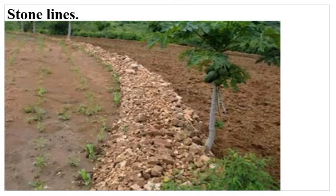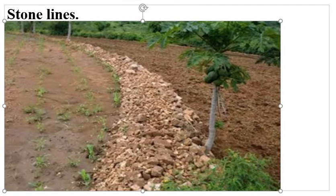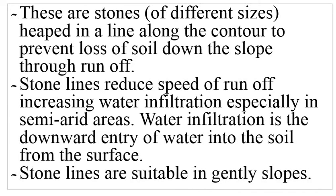Stone lines: these are stones of different sizes heaped in a line along the contour to prevent loss of soil down the slope through surface runoff. Stone lines reduce the speed of runoff and increase water infiltration, especially in semi-arid areas.